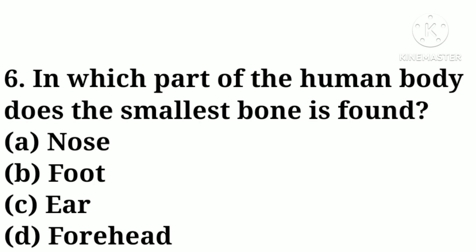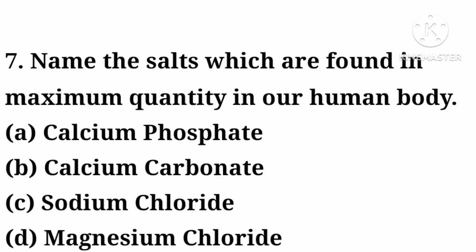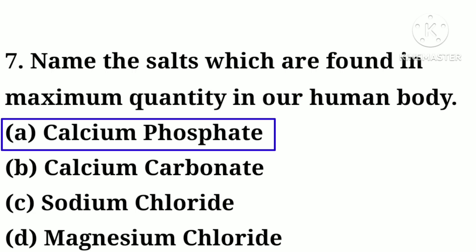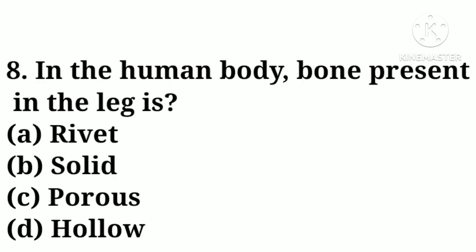Question number six: in which part of the human body is the smallest bone found — option A: nose, option B: foot, option C: ear, option D: forehead. Correct answer: option C, ear. Question number seven: name the salts which are found in maximum quantity in the human body — option A: calcium phosphate, option B: calcium carbonate, option C: sodium chloride, option D: magnesium chloride. Correct answer: option A, calcium phosphate.